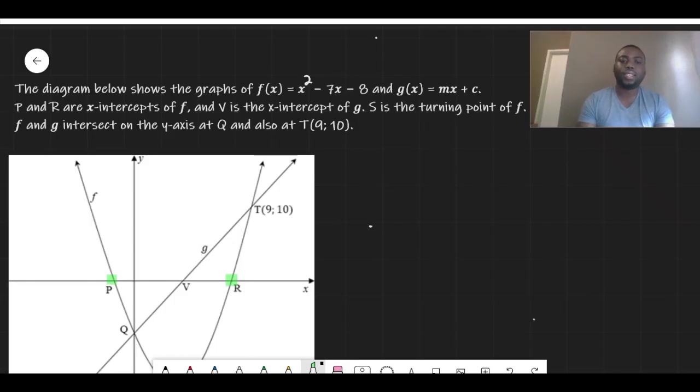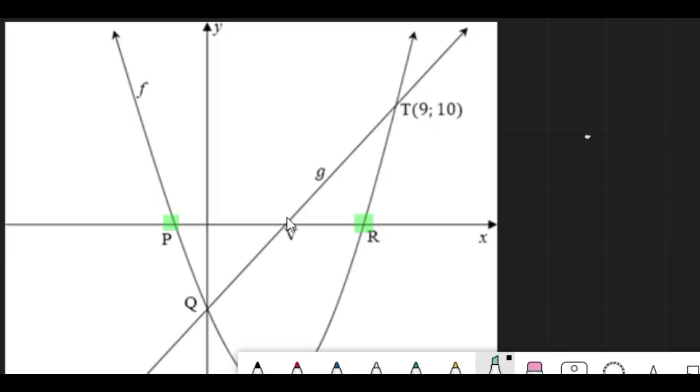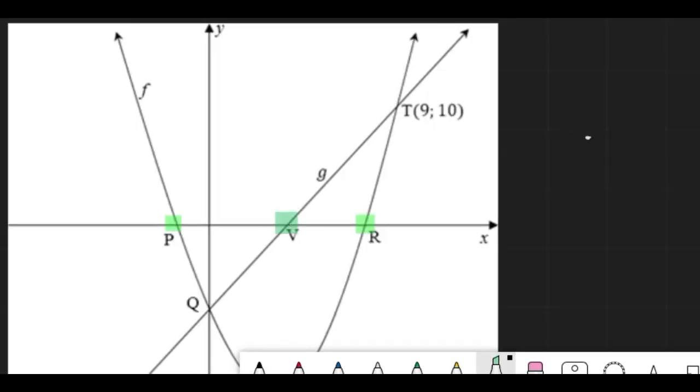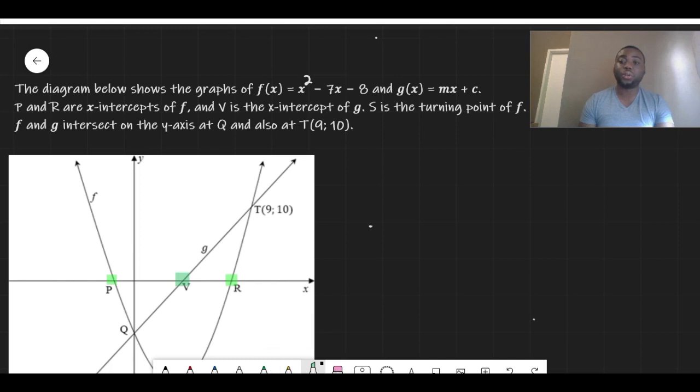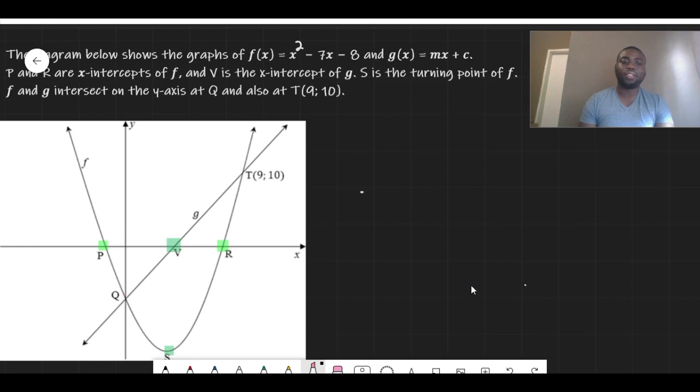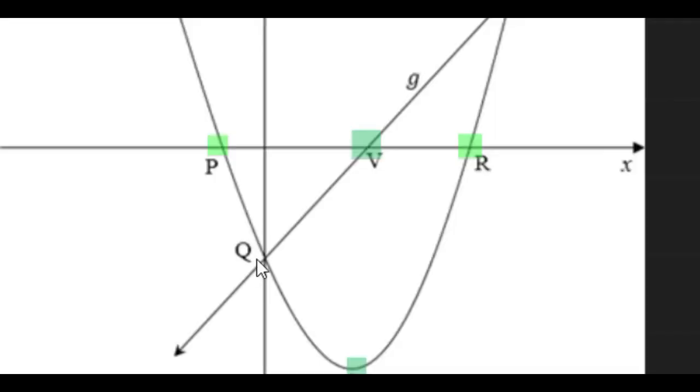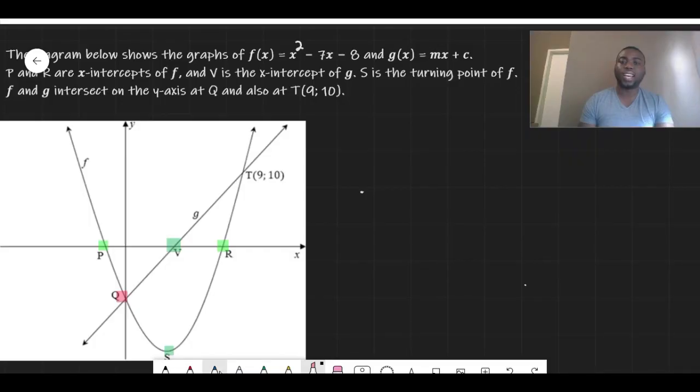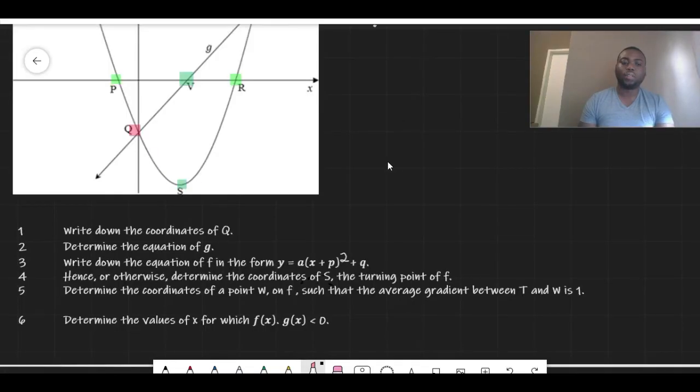They also tell us that V is the x-intercept for g, so that focus is over there. S is the turning point for f, so they are talking about this one over here. F and g intersect at the y-axis at Q, which means over there.